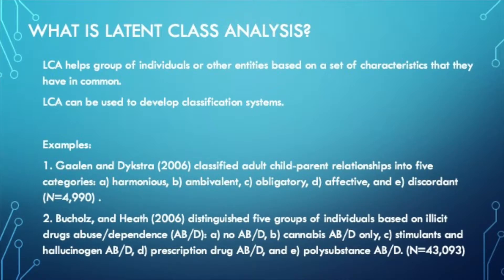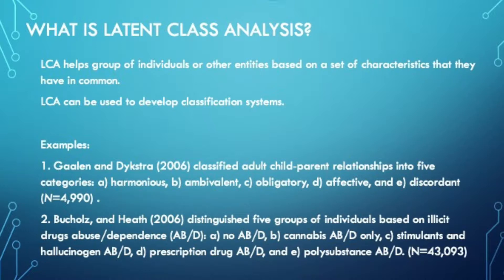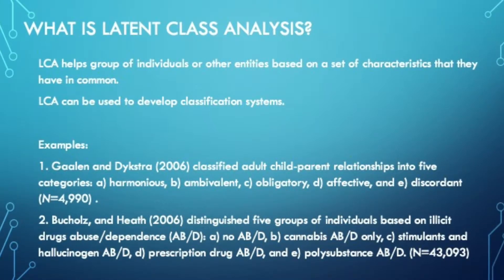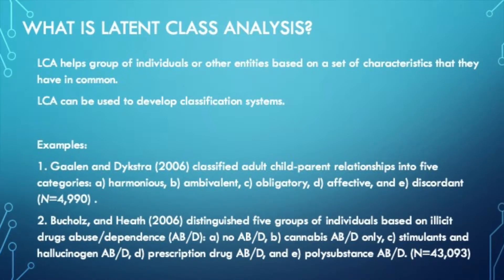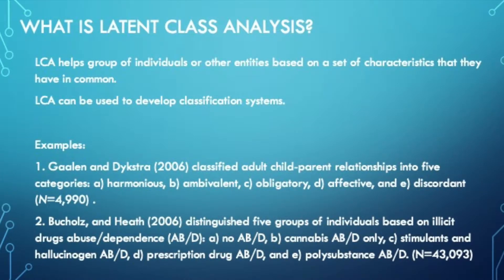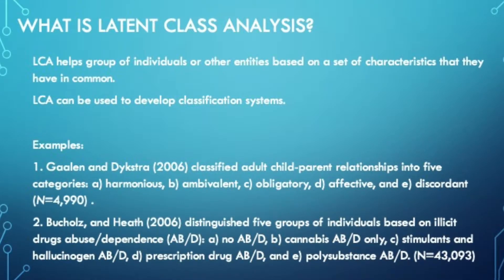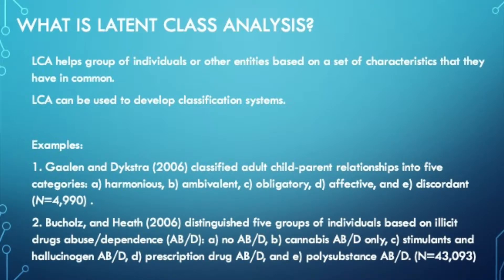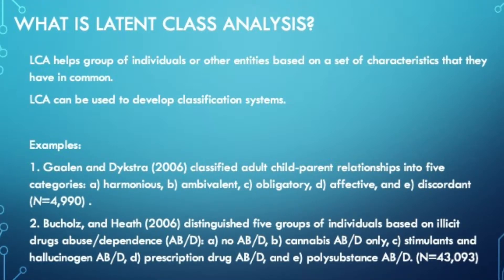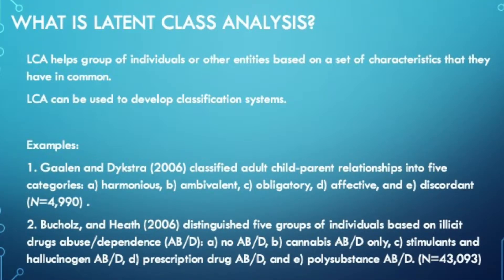For instance, some researchers use latent class analysis to develop a typology or classification of adult-child-parent relationships using a sample of 4,990 individuals. Based on a set of observed variables measuring multiple dimensions of solidarity and conflict, latent class analysis helped differentiate five types of relationships: harmonious, ambivalent, obligatory, affective, and discordant. These types were then further differentiated by age, gender, family size, parental-marital history, and geographic distance.